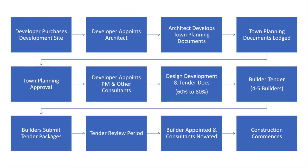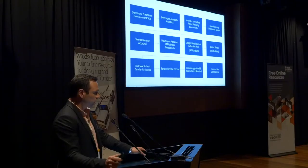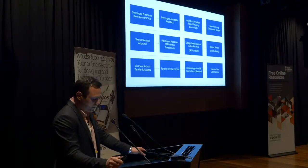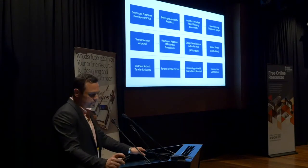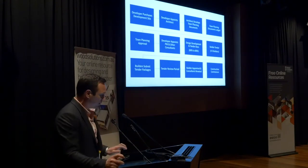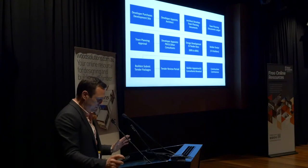They try to find four to five — sometimes six or seven, sometimes three — but on average let's assume four to five builders. That gets tendered over a four to six week period. The builders submit their tender packages, which are then reviewed. A builder is appointed, and then the critical part: the consultants are novated to the builder. The builder takes responsibility for delivery of the design, and then construction commences.